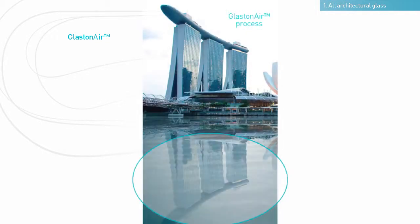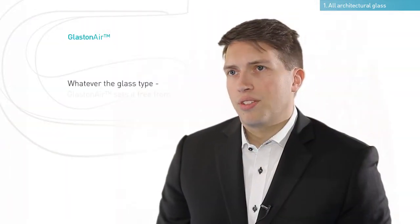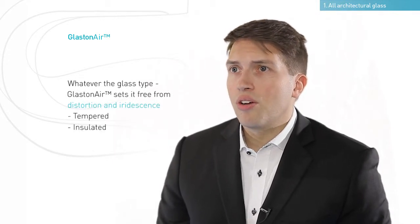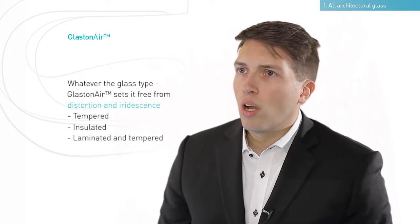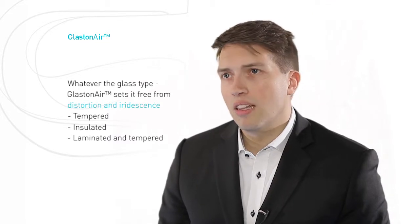Glass on air solves this challenge by producing glass which is virtually free from glass distortion and iridescence, and provides the highest quality solutions for architectural glass. There is practically no difference in which glass type is used — Glaston air raises the quality of all these types of glass to a completely new level.